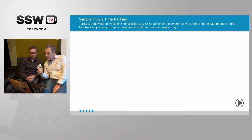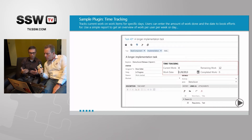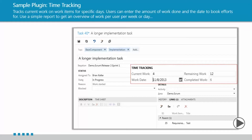The first sample is the time tracking plugin. TFS lacks the ability to book hours on a distinct date and time — if you fill in the remaining work or completed work fields, it books for today. This plugin does time tracking using a custom field. You type in the current work field, you're presented with a work date field, and you can change the date, click save, and the plugin takes care of adapting remaining work and completed work.